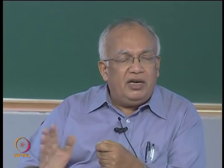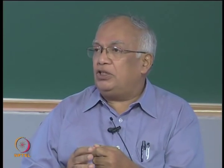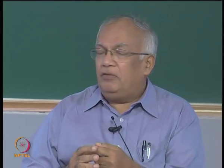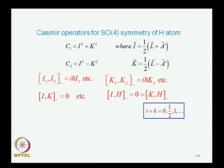For example, you apply a magnetic field, so you break the spherical symmetry and things are different along one direction. Symmetry and degeneracy go together, and when you recognize the complete symmetry of the hydrogen atom — which is SO4 — you are able to explain the energy spectrum of the hydrogen atom and also the degeneracy.